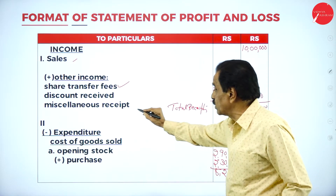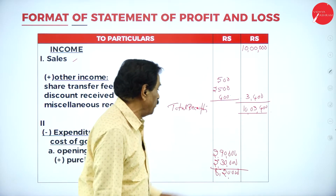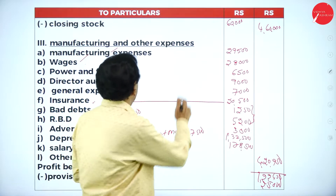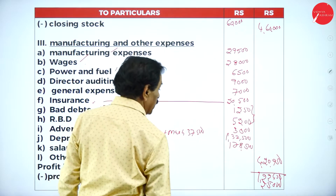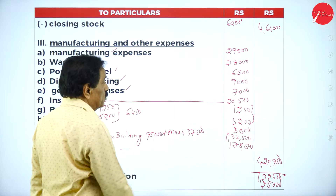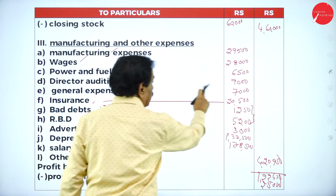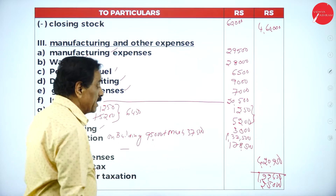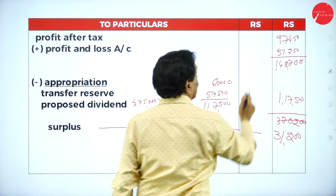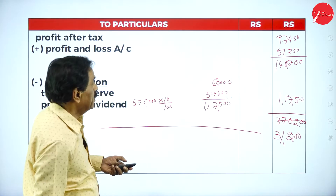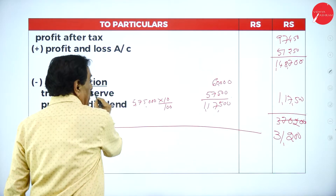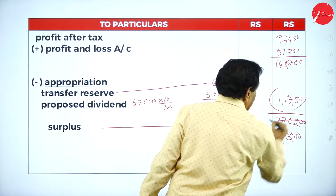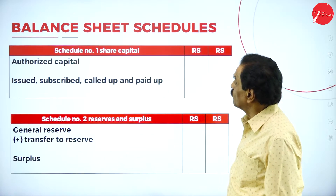Recap: sales ₹10 lakh, no sales returns. Share transfer fees ₹500, discount received ₹2,500, miscellaneous receipt ₹400 — total receipts ₹10,03,400. Opening stock ₹2,90,000 + purchases ₹2,30,000 = ₹5,20,000 minus closing stock ₹60,000 = ₹4,60,000 cost of goods sold. Manufacturing expenses, wages, power and fuel, director fees, and all other expenditure added and deducted give profit before tax ₹1,22,450. After provision for taxation ₹25,000, profit after tax is ₹97,450. Adding last year's P&L ₹51,250 gives ₹1,48,700. Transfer to reserve ₹6,000 + proposed dividend ₹57,500 = ₹1,17,500, deducted gives surplus ₹31,200.